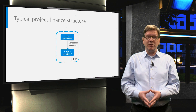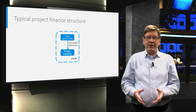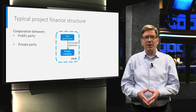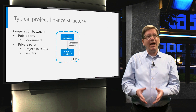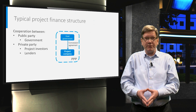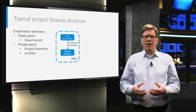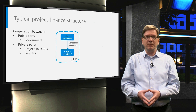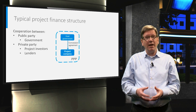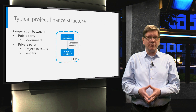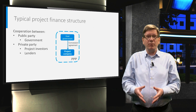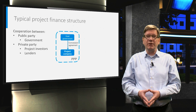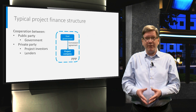The concession agreement is interesting in that it tries to match the requirements of two very different stakeholders: the public party — that's the government — and the private party, which is mainly the project sponsor and the lenders. The government tends to focus on very different objectives than the private parties. The private parties see the project as part of their commercial business; they expect an acceptable return for all the work and capital they invest, and they are driven predominantly by financial motives and apply financial analysis.